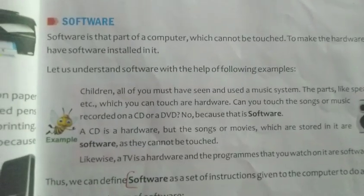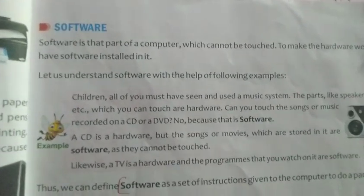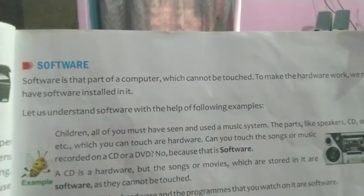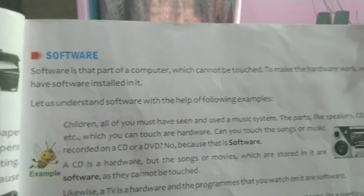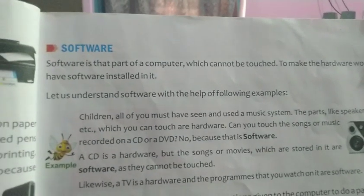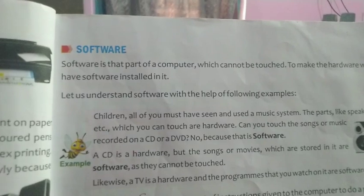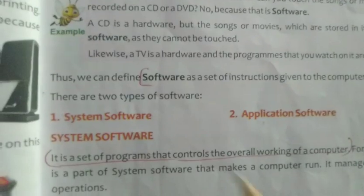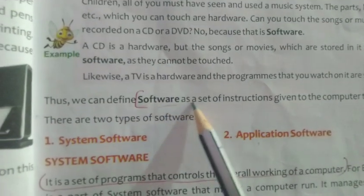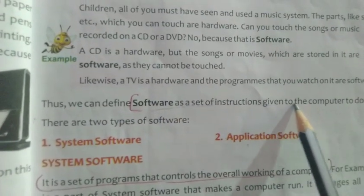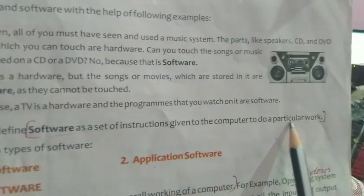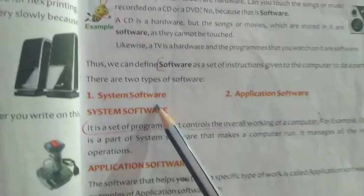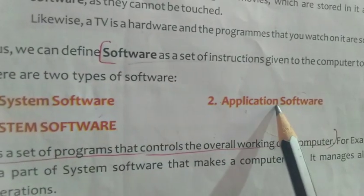Next, the term software. Software refers to the part of a computer which cannot be touched. Software is a set of programs or instructions which works according to the instructions of the user — a set of instructions given to the computer to do a particular task. Software is divided into two types: system software and application software.